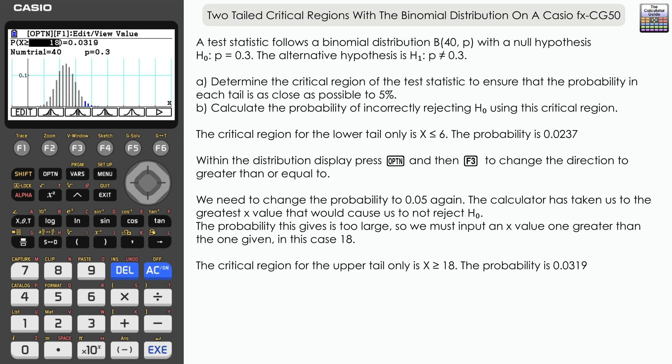Let's define the critical region. We can have x values less than or equal to 6, or x values greater than or equal to 18. If any future test value falls in the region between 0 and 6 or between 18 and 40, that would cause us to reject H₀.